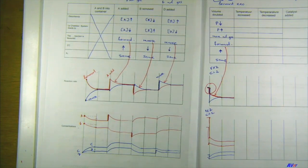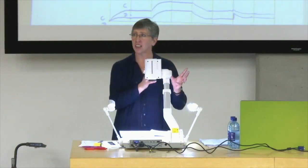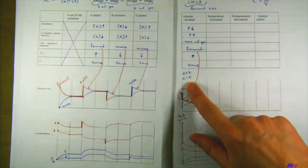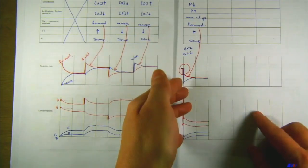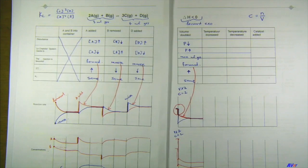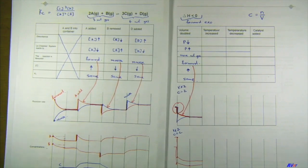When working with volume and Le Chatelier, think pressure. But when drawing graphs, think concentration. If volume doubles, concentration halves — all concentrations — so both rates must decrease. It's just a question of which decreases the most.